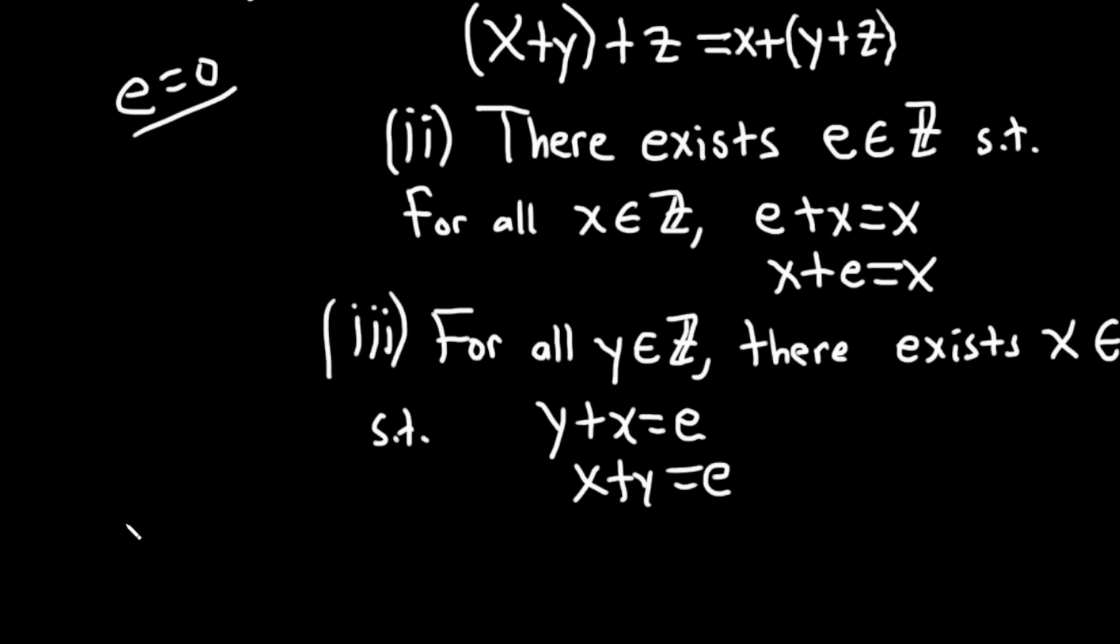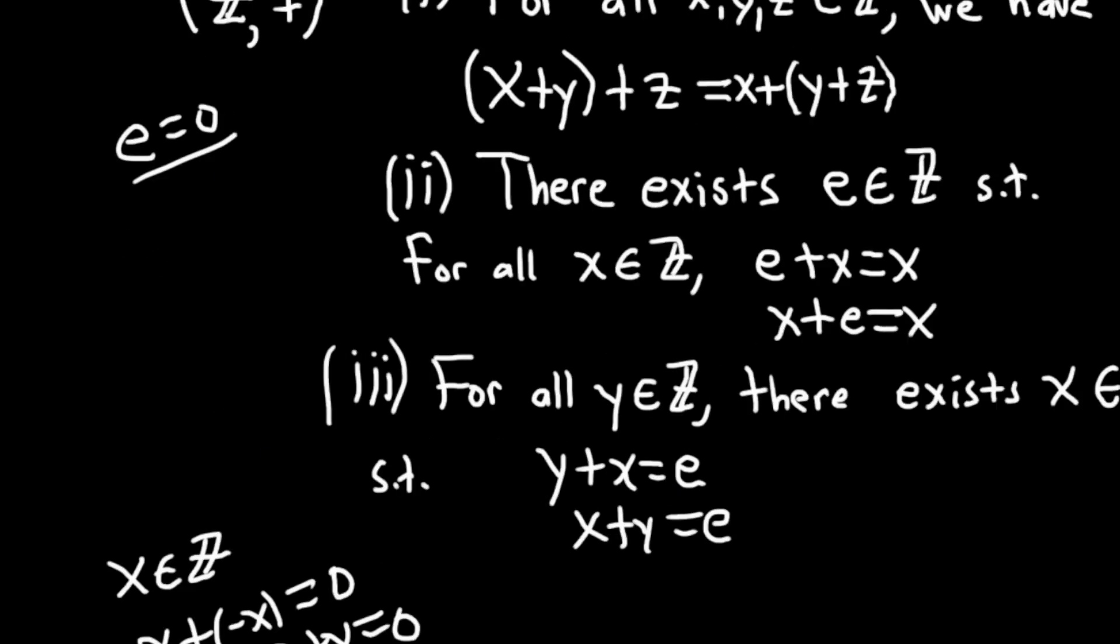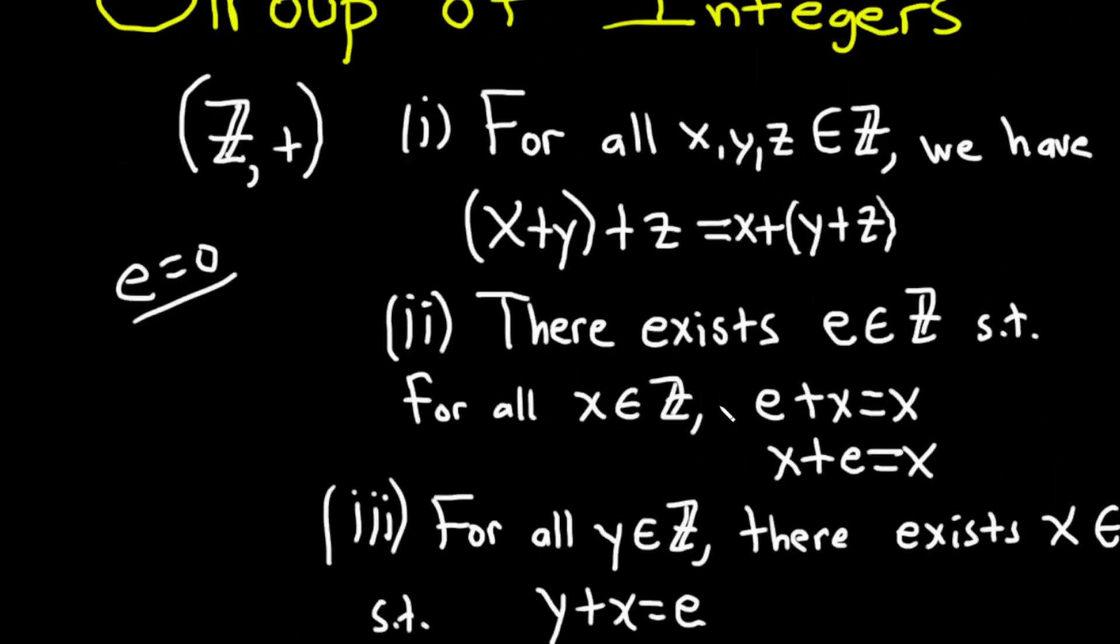Because if you have x in ℤ, the inverse of that element is negative x. That's also an integer, so it's also in ℤ. And x plus negative x is equal to zero. And negative x plus x is equal to zero. And zero is the identity. So everything is good. So this is a group and it's a very simple group.